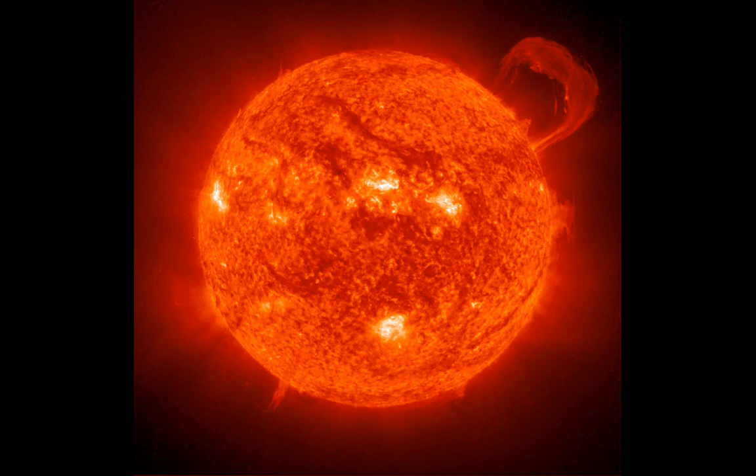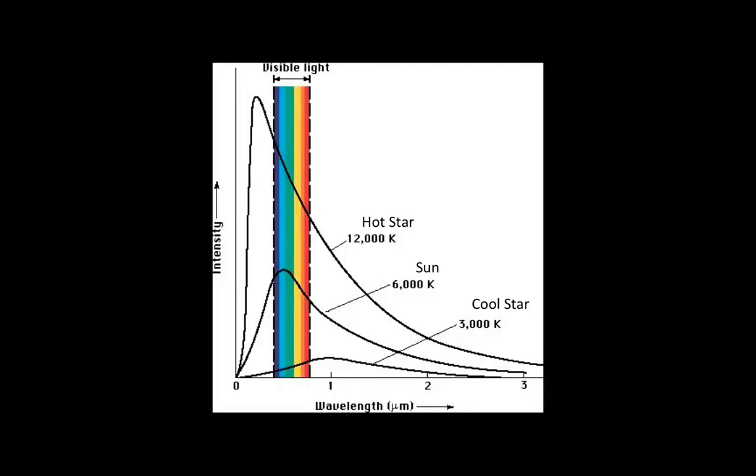As we learned in the last unit, hot, dense objects like stars, so-called black bodies, emit light of all wavelengths or colors. But the wavelengths where they emit most of their light, the peaks of their spectra, are determined by their temperature.